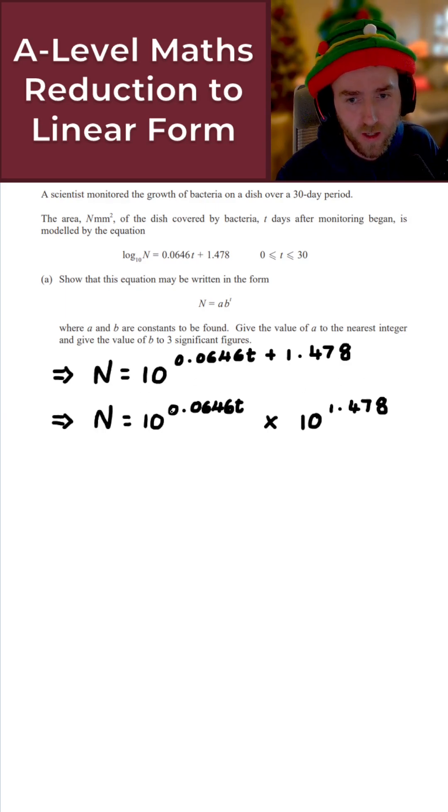What I can now do here is just use the basic rules of indices. So going from this line here, that's 10 to the power of 0.0646T plus 1.478. That's just the same as writing this as a product. And then at this point here, we're getting really close to having it in this form here.